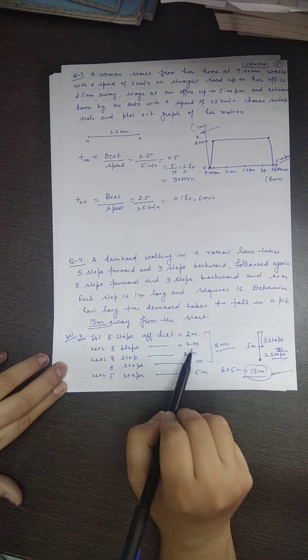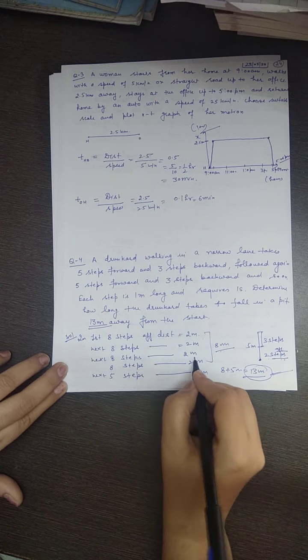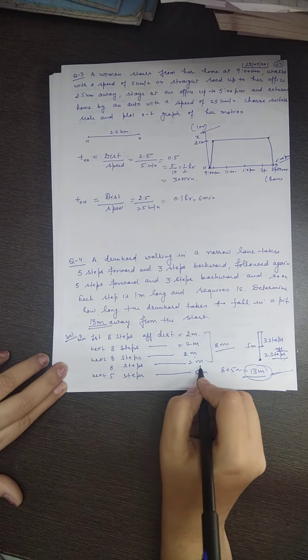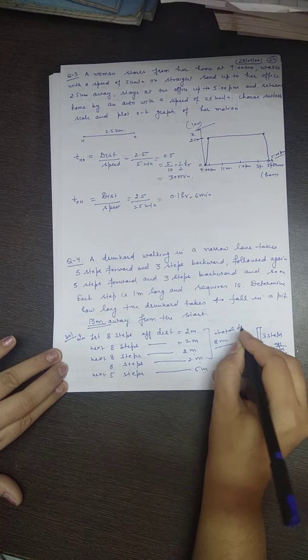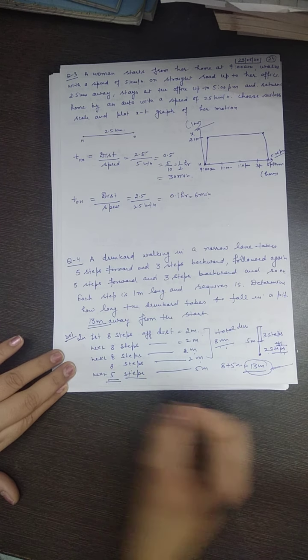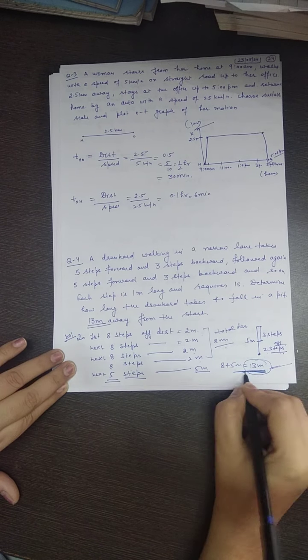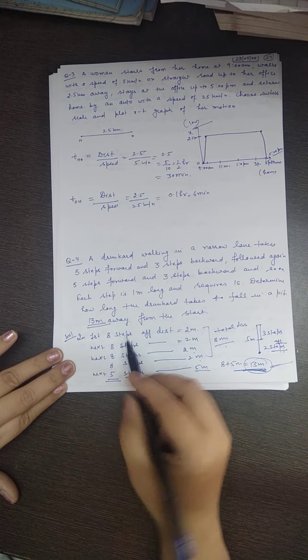In the next 8 steps, he again goes forward 2 meters. Next 8 steps, another 2 meters. Then in the next 8 steps, 2 more meters. Total distance covered is 8 meters. Now when he takes the next 5 steps, he will fall into the pit. He won't be able to take his backward steps. So total steps: 32 plus 5 equals 37 steps.